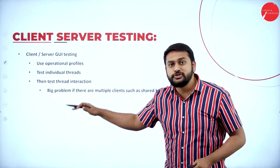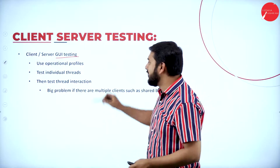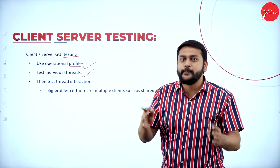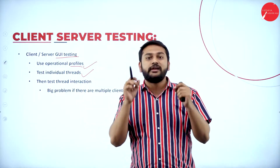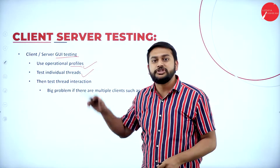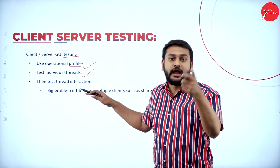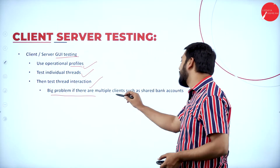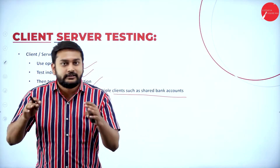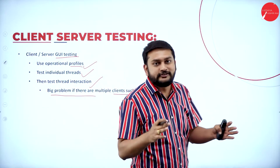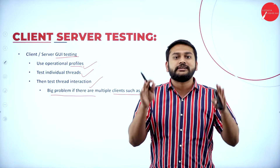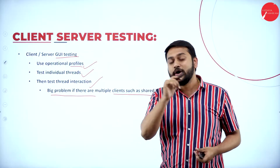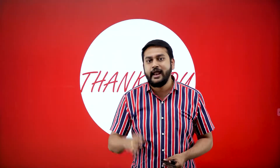For client-server GUI testing, the first step is to use operational profiles and test the individual threads. Then they test the thread interaction. A big problem arises with multiple clients — for example, shared bank accounts — where performing tasks simultaneously with multiple processors causes dynamic interaction problems. This concludes the session on interaction testing.